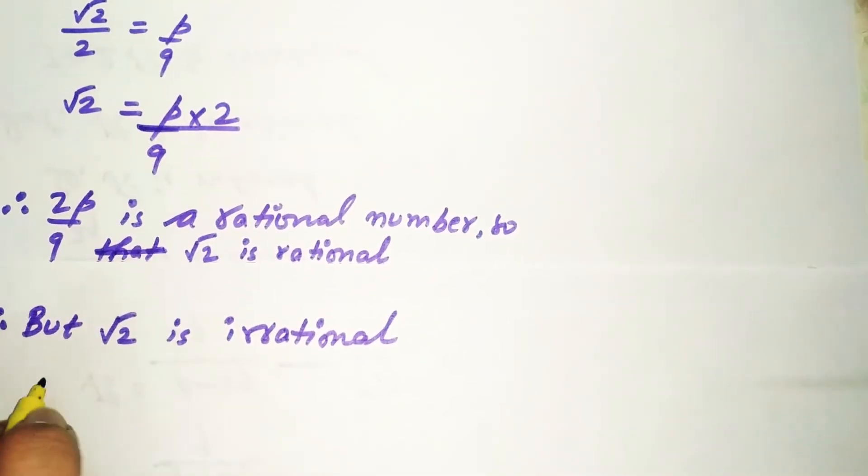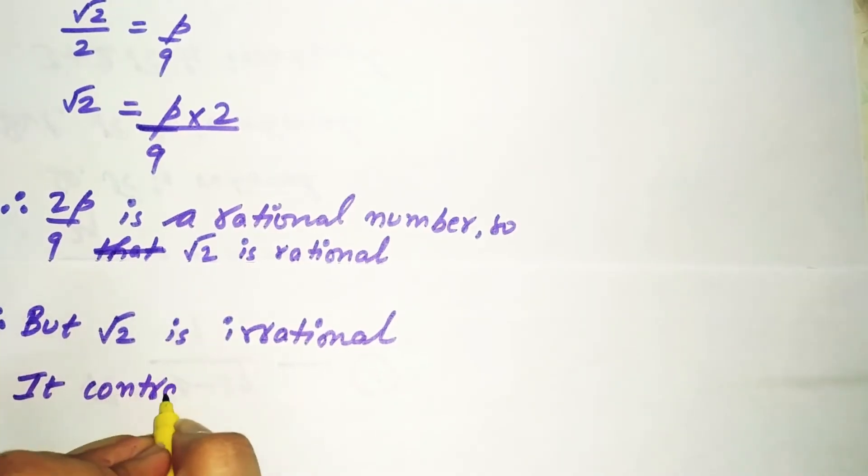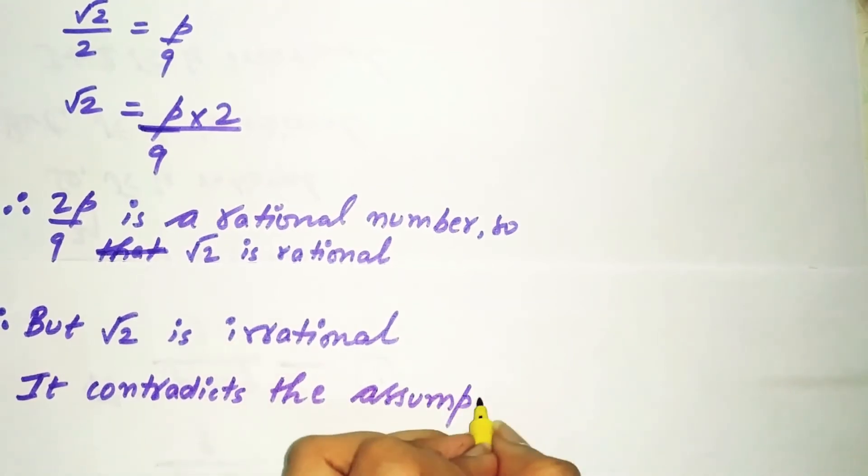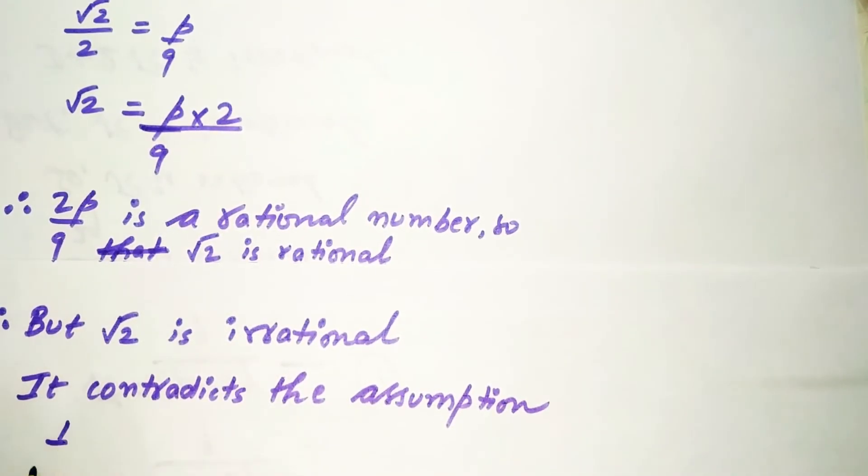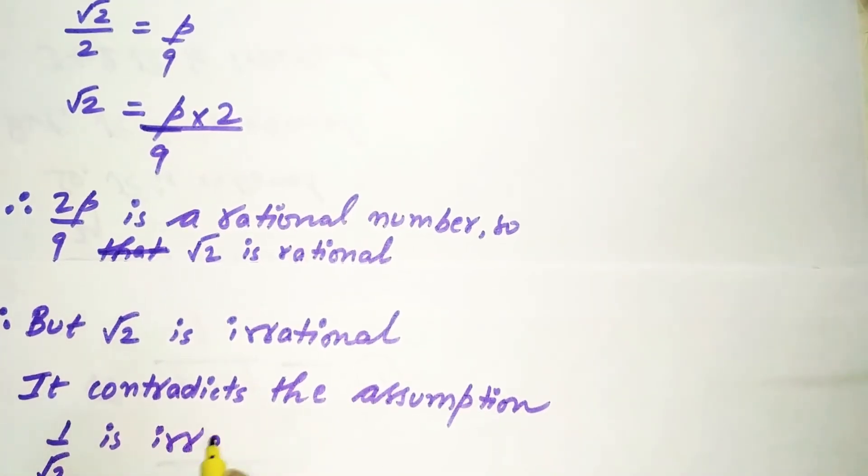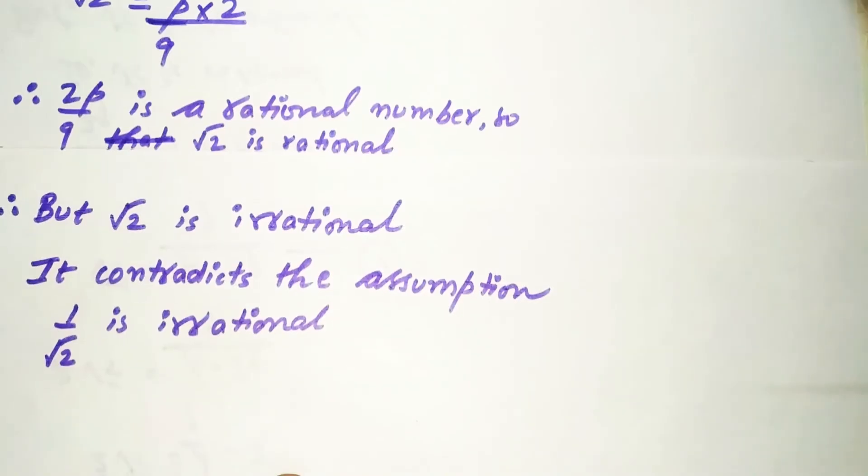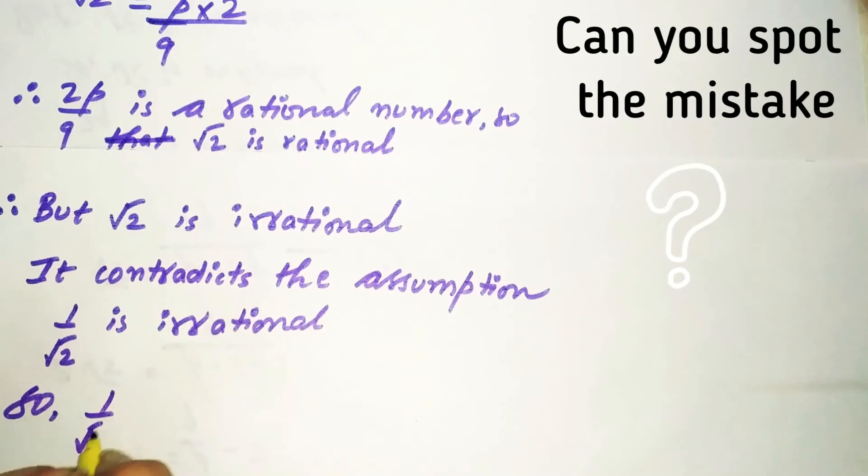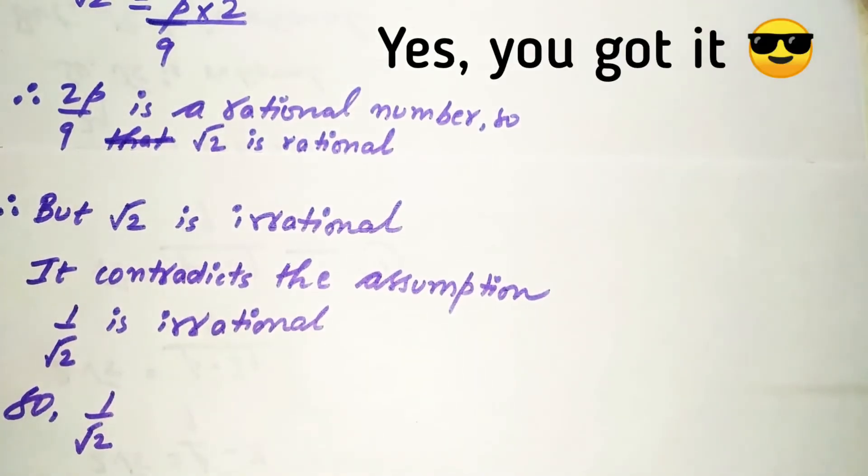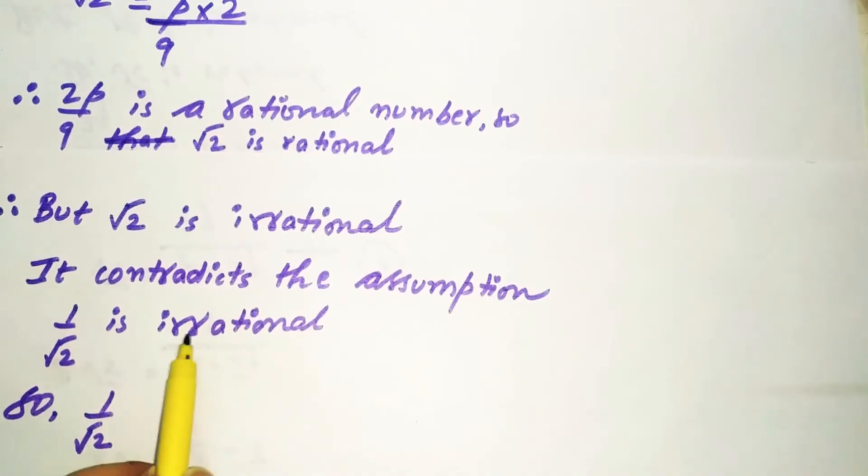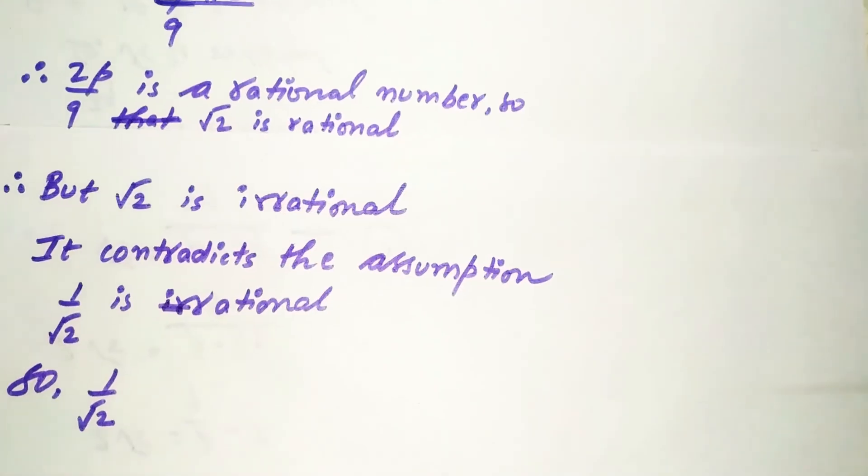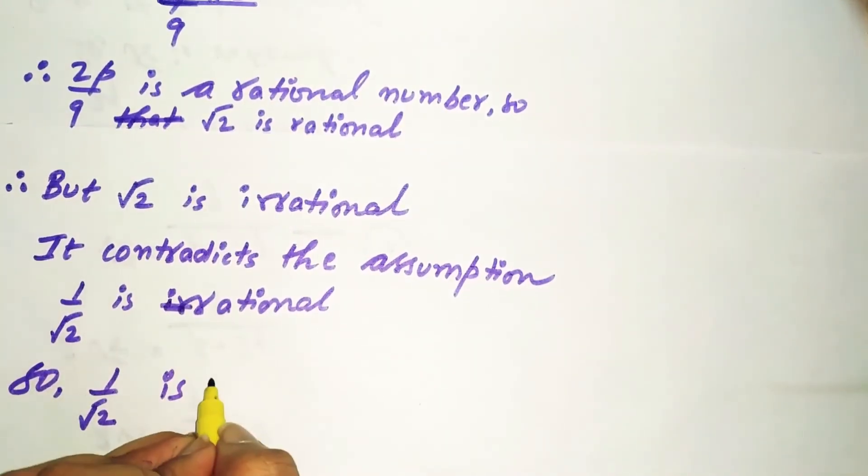Remember to write down this line: we assumed that 1 by root 2 is rational, so 1 by root 2 is irrational.